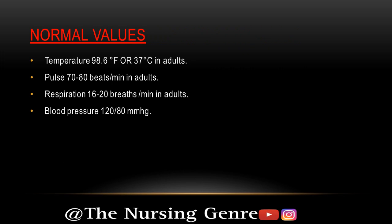Normal values of vital signs. First, temperature: 98.6 degrees Fahrenheit or 37 degrees Celsius in adults. Pulse: 70 to 80 beats per minute. Respiration: 16 to 20 breaths per minute. Blood pressure: 120 by 80 mmHg. These are the normal values of vital signs.